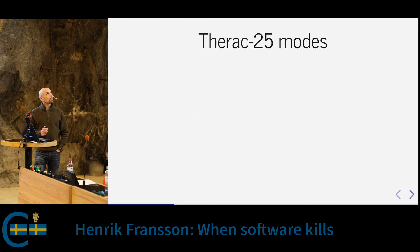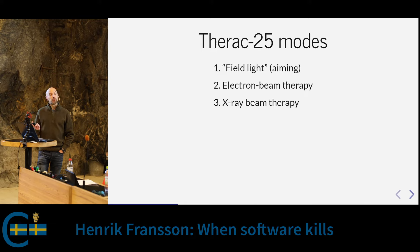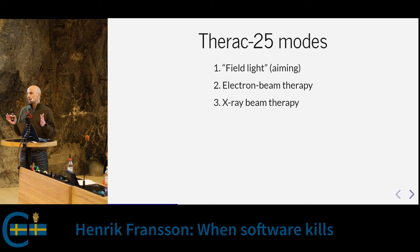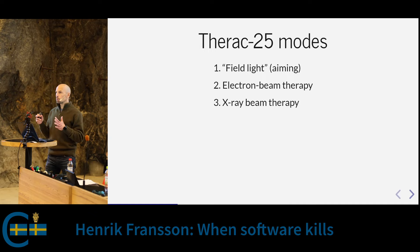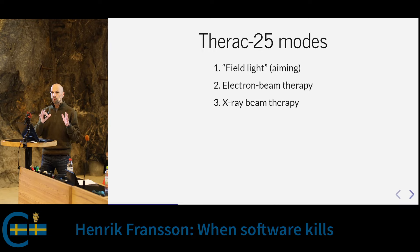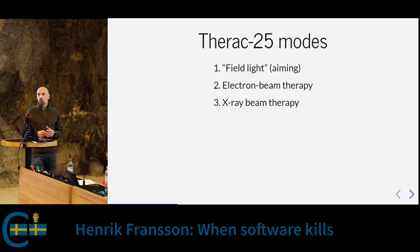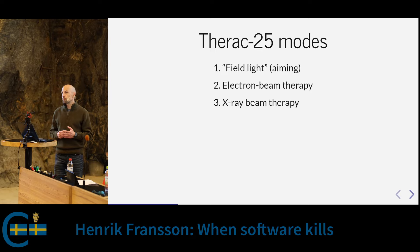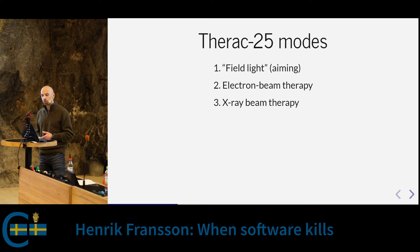The machine had three modes of operation. The first, called field light, was used when the operator was aiming the machine at the patient — a regular light bulb shining a dot onto the target, with no radiation. The other two modes were the two different therapy types: electron beam and X-ray beam, used depending on what kind of tumor you wanted to treat.